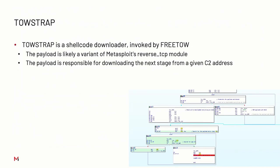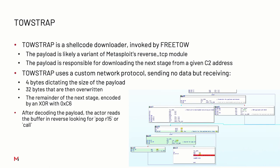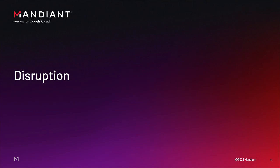Now let's move on to Toastrap, the shellcode downloader they ran. It's likely a copy of Metasploit's reverse TCP module - it just downloads the next stage from a given C2 server. It had some customizations, likely to avoid basic network signatures. The first download was four bytes, then 32 bytes it just ignored, then finally the rest of the file - with the first four bytes being the length. They also had what's probably an integrity check: once you've decoded the payload, find the pop R15 or call depending on your architecture, and call that.